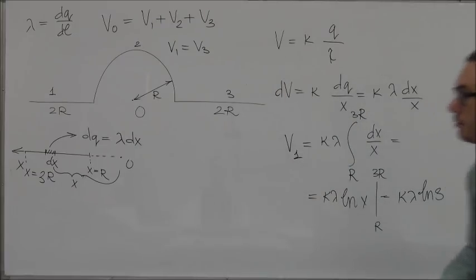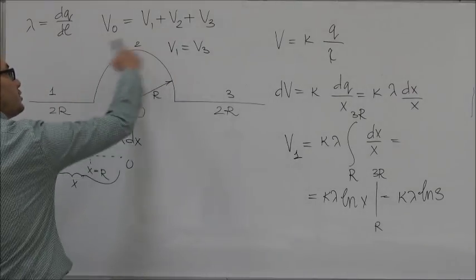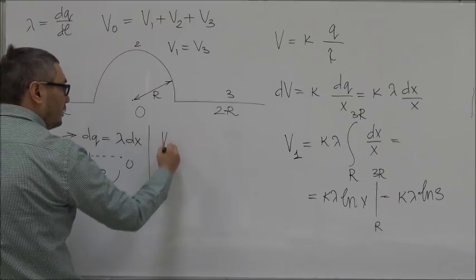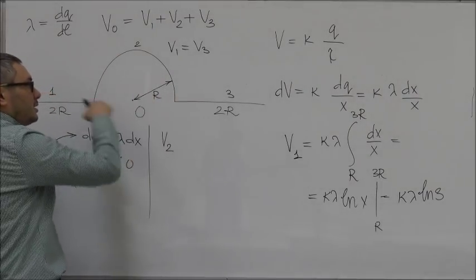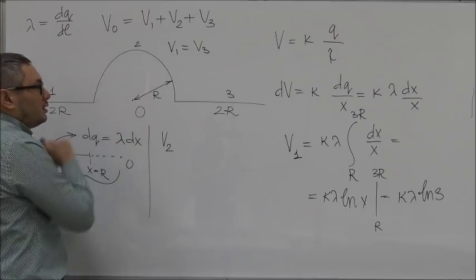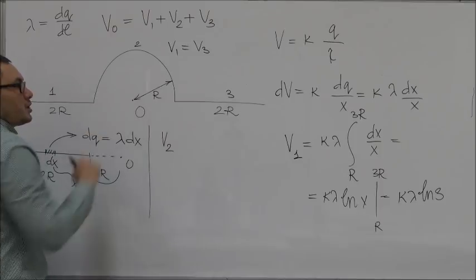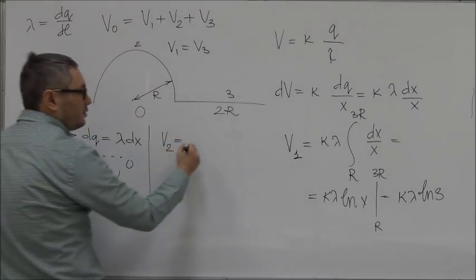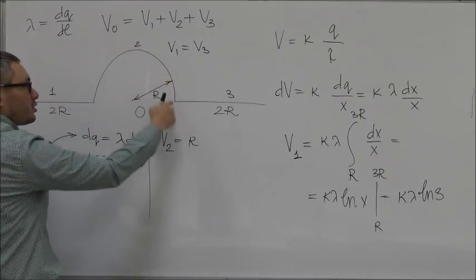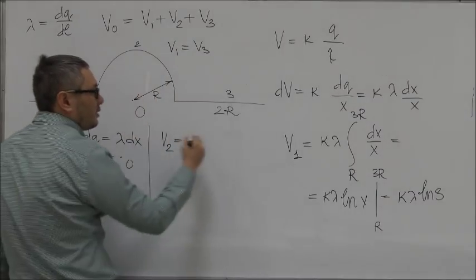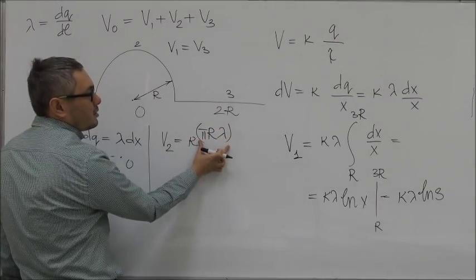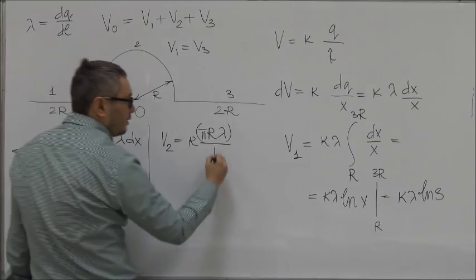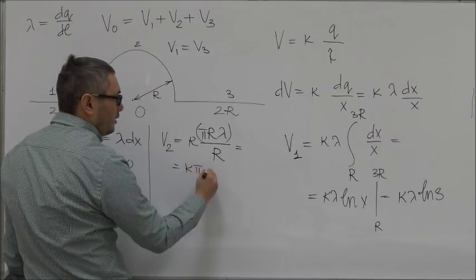Now we calculate the contribution due to the semicircular part, V2. What you can notice is that every point on the semicircle is at the same distance R from point O, which means all the charge is at the same distance. So V2 equals k times the total charge on the semicircle. The length of the semicircle is pi·R and the charge density is lambda, so V2 equals k·pi·lambda·R divided by R, giving k·pi·lambda.